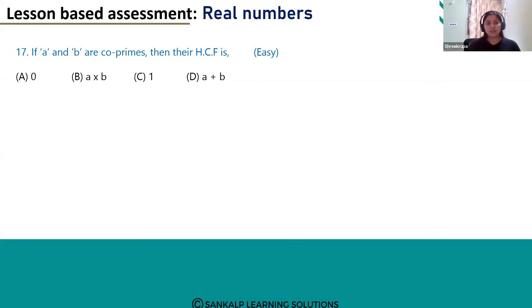Hello everyone! Let's see the 17th question. If A and B are coprimes then their HCF is.